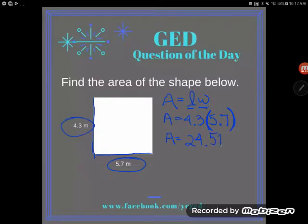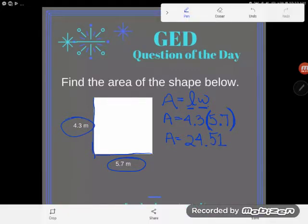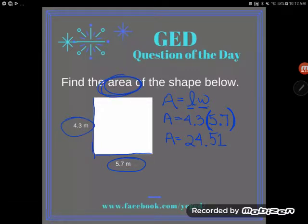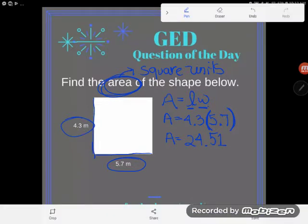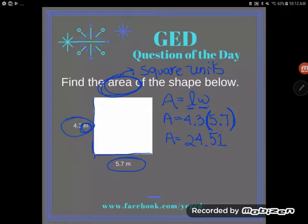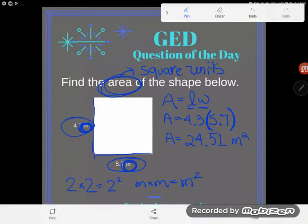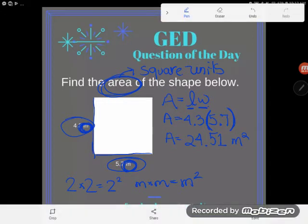And 24.51 what? Well, a couple of ways to know what unit I'm in. One thing is I found the area. You might know that area is always measured in square units. You should know that. I highly recommend you print off one of those GED formula sheets and you make that little note to yourself so that every time you use it as you practice, you remember that area is measured in square units. But another way to know this is I just multiplied meters times meters. Just like when you multiply 2 times 2, you can rewrite that as 2 squared. If you multiply meters times meters, you can rewrite that as meters squared or square meters. So that is 24.51 square meters. That is the area of this rectangle.